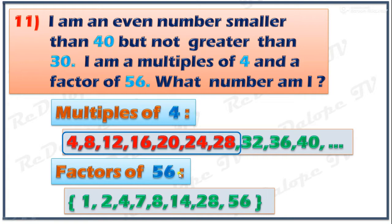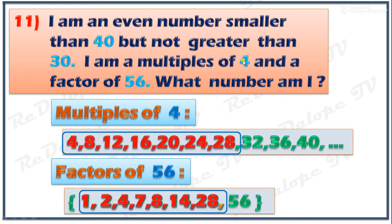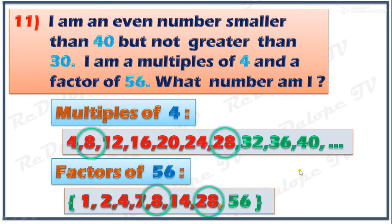For the factors of 56, the numbers smaller than 40 but not greater than 30 are: 1, 2, 4, 7, 8, 14, 28. Now for the second statement — I am a multiple of 4 and a factor of 56 — we have 8 and 8, and 28 and 28. So there are 2 possible answers: 8 and 28.